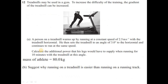Question number 12. A treadmill may be used in a gym to increase difficulty of training. A person warms up by running at a constant speed of 2.5 meters per second with the treadmill horizontal. He then sets the treadmill to an angle of 3 degrees to the horizontal and continues to run at the same speed. Calculate the additional power his legs would have to supply. The mass of the athlete is 80 kg.